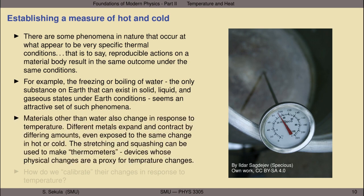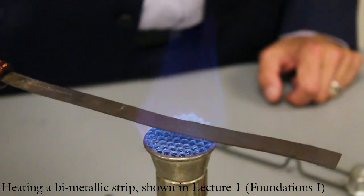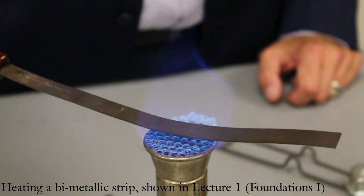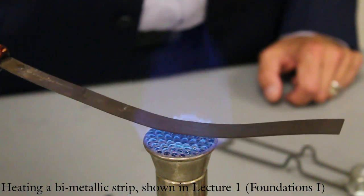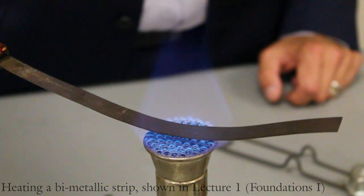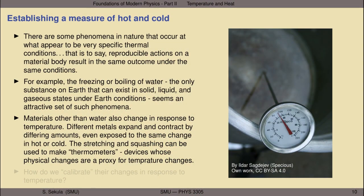There are materials other than water that also change in response to temperature. For example, in the opening lecture video for this series, I showed you the result of heating a bimetallic strip. We've observed already that two metals bonded into contact with each other will bend and curve when exposed to a heat source. That's because different metals expand and contract by different amounts, even when exposed to the same change in hot or cold. The stretching and squashing can be used to make mechanical thermometers — devices whose physical changes are a proxy for temperature changes.